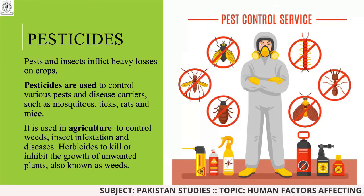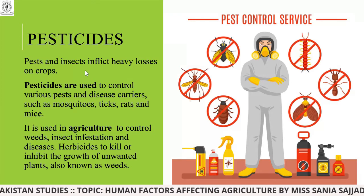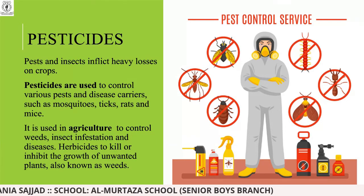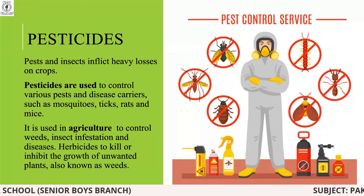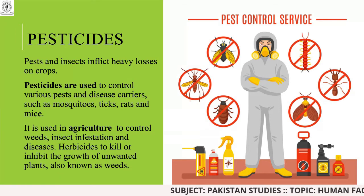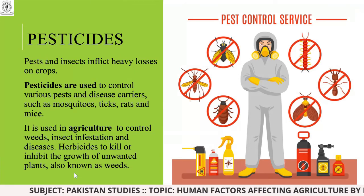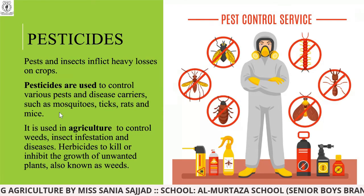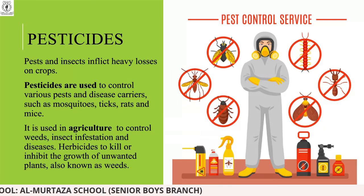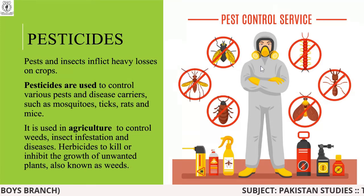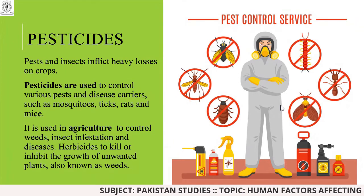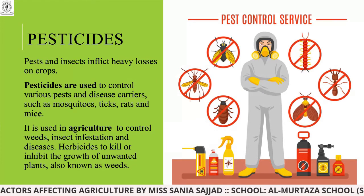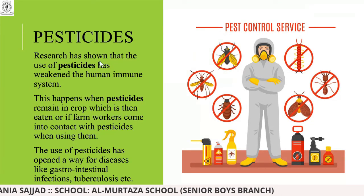Then comes pesticides: pests and insects inflict heavy losses on crops. Pesticides are used to control various pests and disease carriers such as mosquitoes, ticks, rats, and mice. They are used in agriculture to control weeds, insects, infestations, and diseases. Herbicides kill or inhibit the growth of unwanted plants, also known as weeds. If pests attack your crops, they can damage them, reducing profit and making crops unusable.